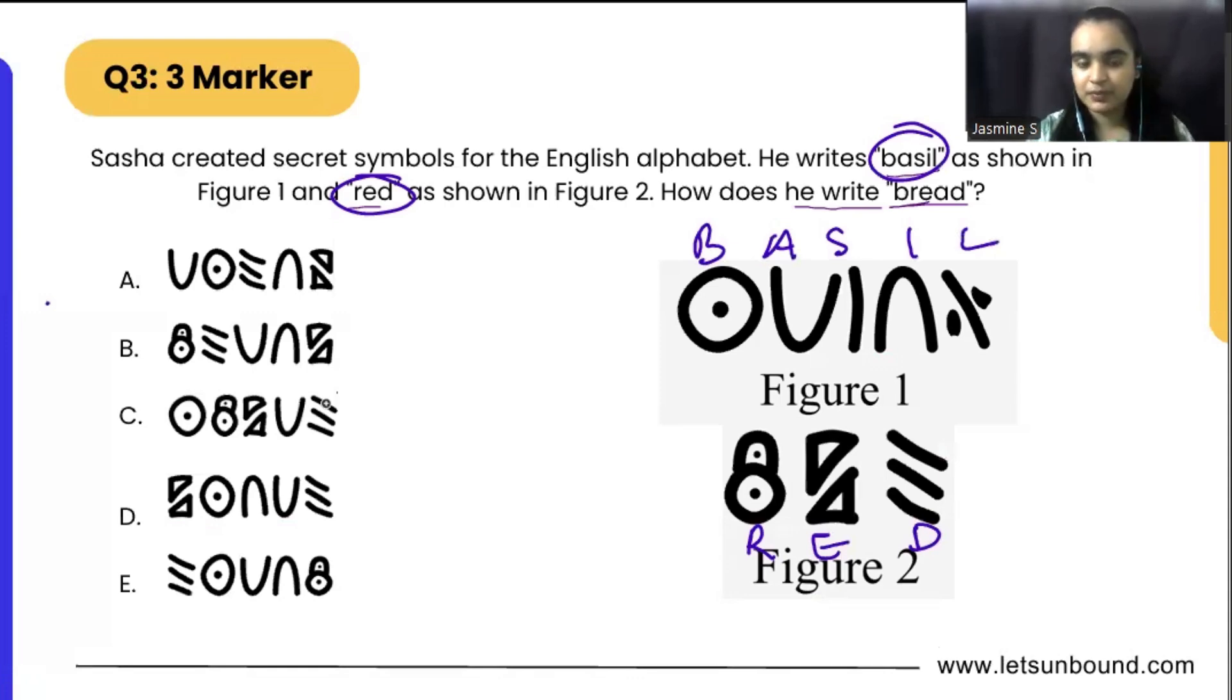Okay. We have to figure out what the secret symbols are for bread. Now, if we're going to see, bread starts with B and Bessel starts with B. That means our correct answer will start with this symbol, a circle with a dot.